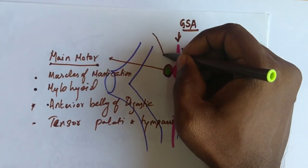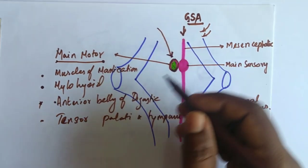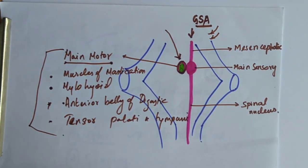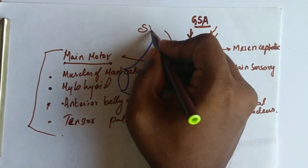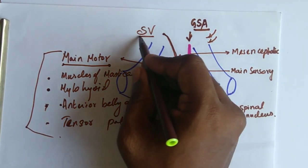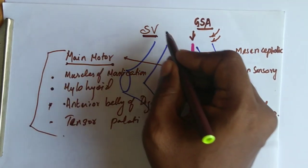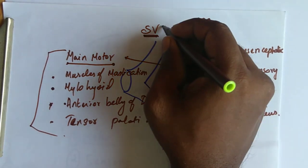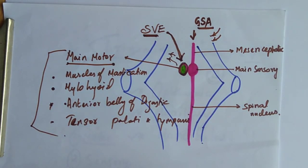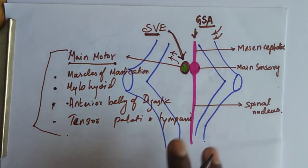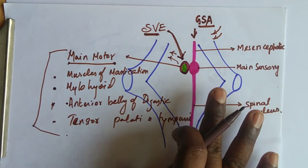Since it is supplying the muscles derived from the branchial arches — muscles derived from the mesenchyme of the branchial arches — it is termed special visceral efferent. It is called special visceral, not general, because of the branchial arch origin, and efferent because the fibers are going away from the nucleus. So these are the functional components of the trigeminal nerve.